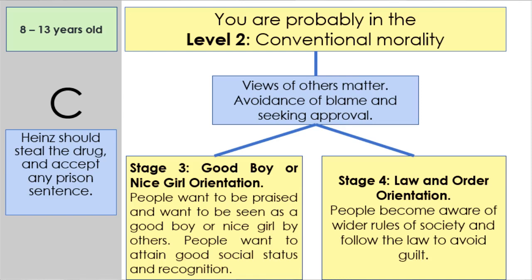If your answer is C — Heinz should steal the drug and accept any prison sentence — you are probably in Level 2, conventional morality. This level is generally from 8 to 13 years old, though adults can also be at this level. At this age range, people most likely level up into this stage. The views of others matter, avoidance of blame, and seeking approval are key characteristics.